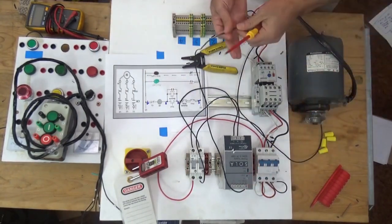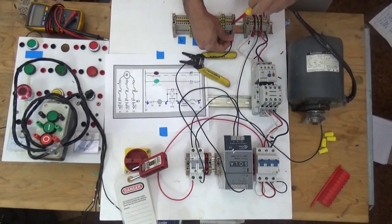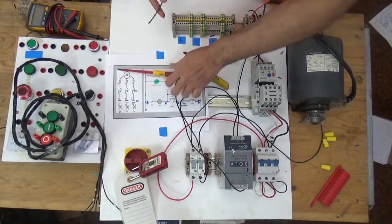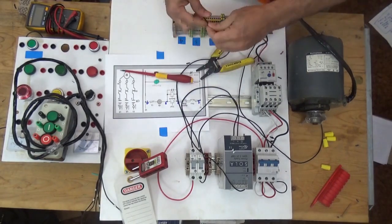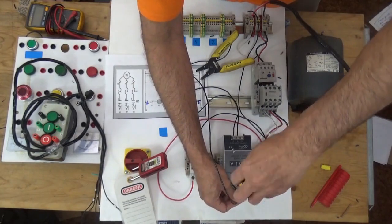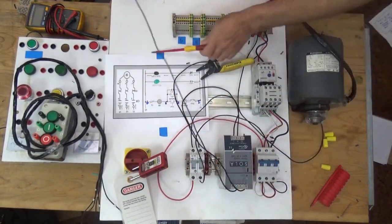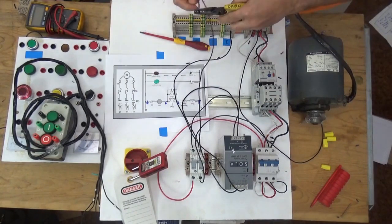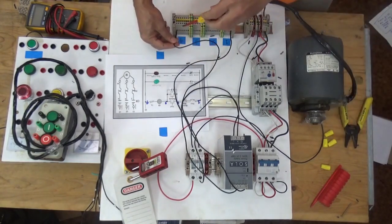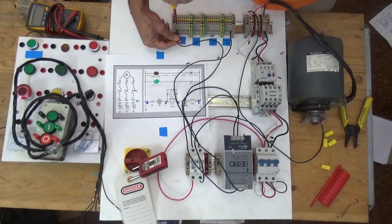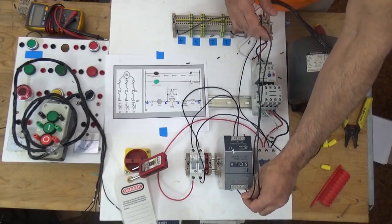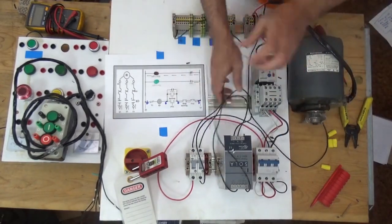From the positive terminal of our power supply going to line 1. For the negative supply for our 24 volts going to line 4. So now we already have supply from our 24 volt power supply going to our terminal block.